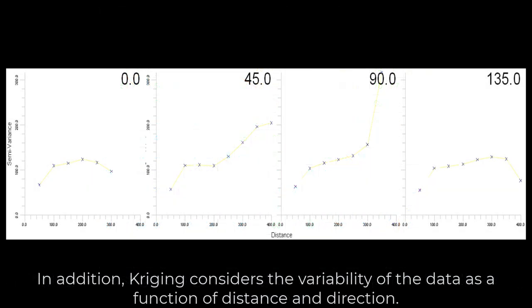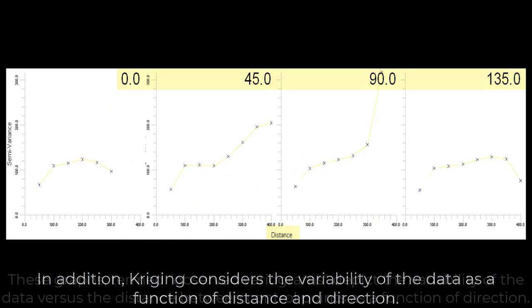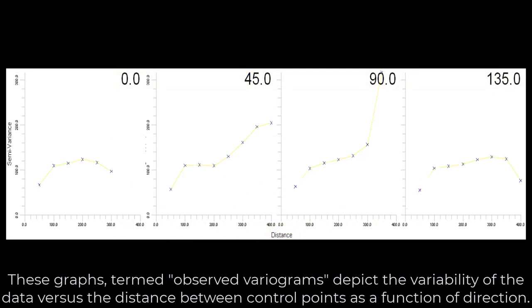In addition, Kriging considers the variability of the data as a function of distance and direction. These graphs, termed observed variograms, depict the variability of the data versus the distance between control points as a function of direction.